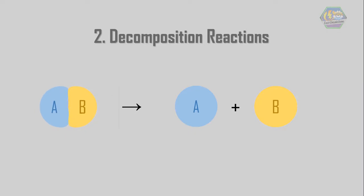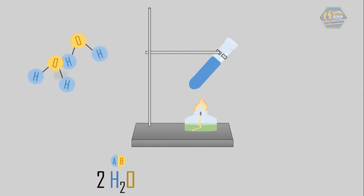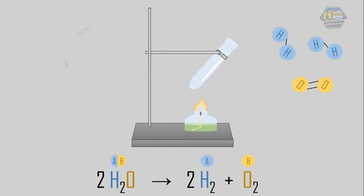Its general formula is AB yields A plus B, where A and B are different elements or components. For example, decomposition of water has this formula. Here the water decomposes to form hydrogen and oxygen.